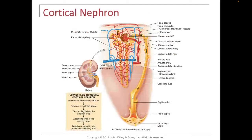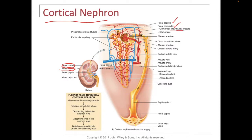If you look on the left-hand side, we can refresh our memory as to where the cortex is and where the renal medulla is. When we look at the cortical nephron up here, we can see the renal capsule — the outside of the kidney — which is not the same thing as the renal corpuscle. The renal corpuscle is Bowman's capsule, which houses the glomerulus.